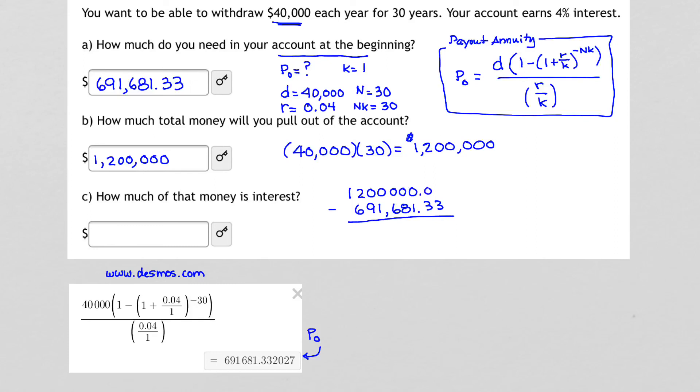So if I subtract that from the amount that I pulled out of my account, I will determine the amount of interest that I actually was using, or how much of that money was interest. Either using a calculator or subtracting by hand, you should come up with $508,318.67. And that completes part C.